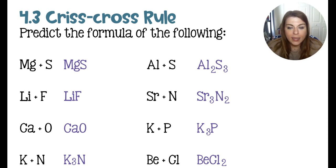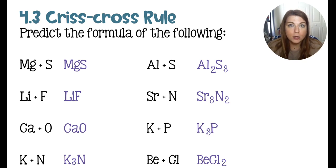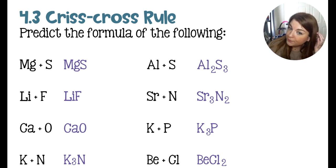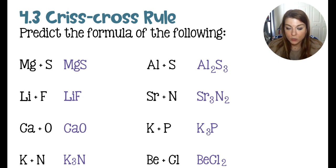Potassium and phosphorus: nitrogen and phosphorus are in the same periodic table group, and since they're both bonding to a group one element, their bonding pattern looks similar — we get K₃P. Beryllium and chlorine: beryllium is a member of group two and will lose those two electrons to look like helium. Chlorine always has a minus one charge, so we get BeCl₂.